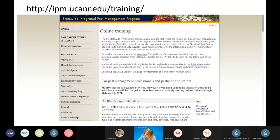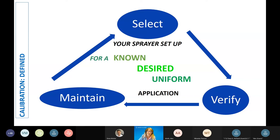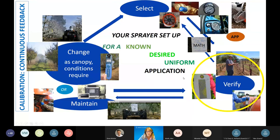Talking about calibration — the definition of calibration is to select, verify, and maintain your sprayer setup for a known, desired, and uniform application. That's our goal: a known, desired, and uniform spray application. It seems straightforward until you really look at what's involved.